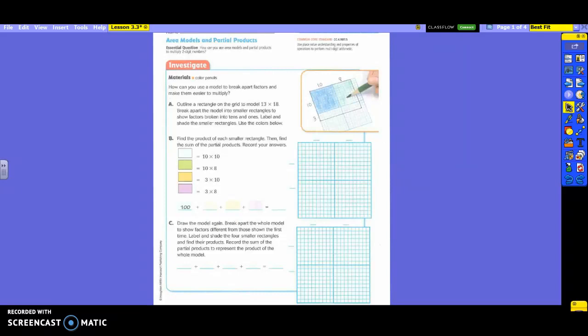Let's read A. Outline a rectangle on the grid to model 13 times 18. Break apart the model into smaller rectangles to show factors broken into tens and ones. Label and shade the smaller rectangles.